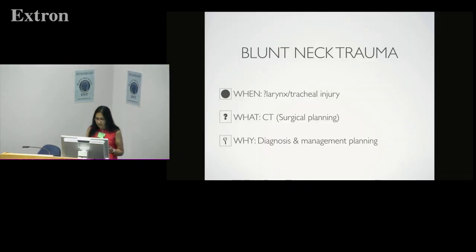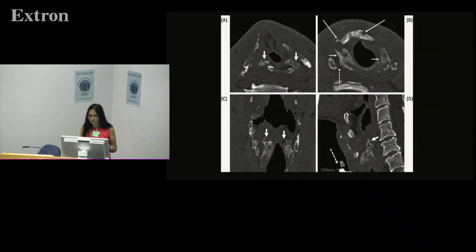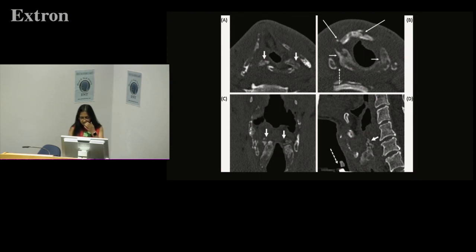When you suspect laryngeal or tracheal injury, you should request a CT for deciding how to manage the patient. On CT you can easily diagnose fractures of the thyroid, arytenoid, and cricoid cartilage, and also assess the airway. CT is pretty good for fractures of your laryngeal skeleton.